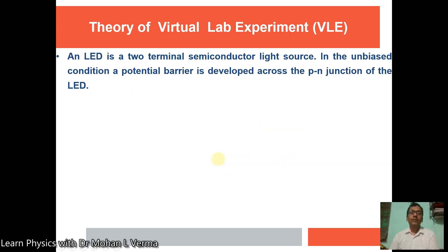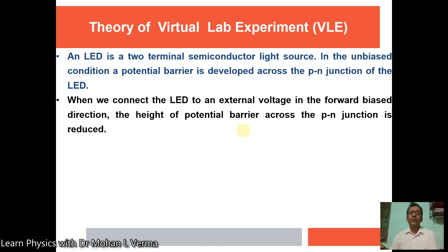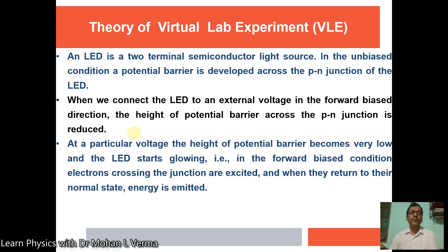Now let's start the theory. A light emitting diode is a two-terminal semiconductor light source. In unbiased condition, a potential barrier is developed across the p-n junction of the LED. When we connect the LED to an external voltage in forward bias direction, the height of the potential barrier across the p-n junction is reduced. At a particular voltage, the potential barrier becomes very low and the LED starts glowing.